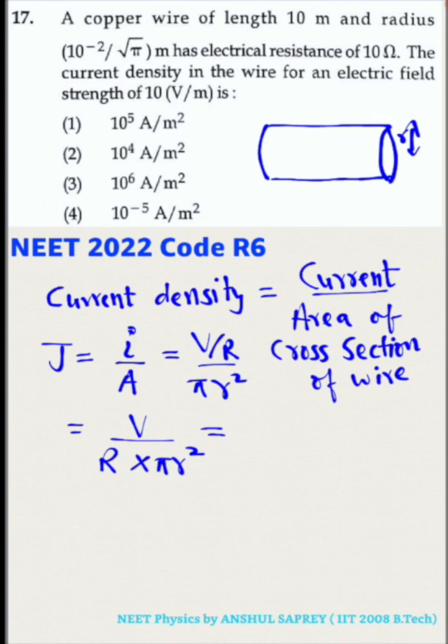Now relation between voltage and electric field is v by l equals e. Electric field is equal to voltage per unit length. So v can be written as e into l. So current density is e into l divided by resistance into pi into r square.